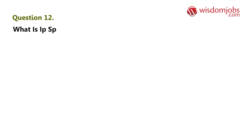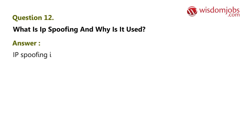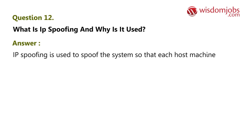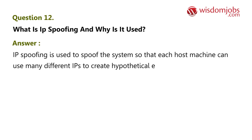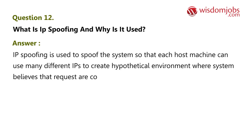Question 12: What is IP spoofing and why is it used? Answer: IP spoofing is used to spoof the system so that each host machine can use many different IPs to create a hypothetical environment where the system believes that requests are coming from different locations.